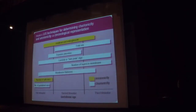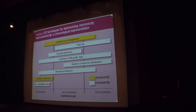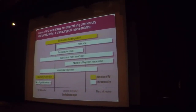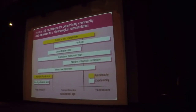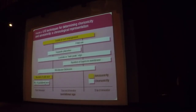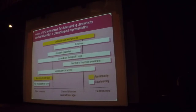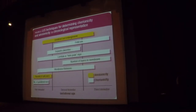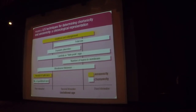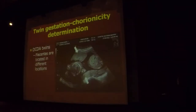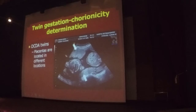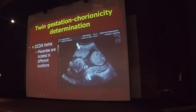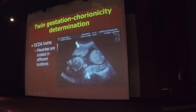Absence of the lambda sign is seen in monochorionic twins. If you don't see the lambda sign and instead see a T-sign, that indicates a monochorionic twin. In the primary care setting, when you do a scan, first confirm the number of gestations and dates, then determine chorionicity. By the second trimester, you should be able to determine the lambda or twin-peak sign. Looking at placental location — two placentas on different sides — also tells you it is a dichorionic twin.